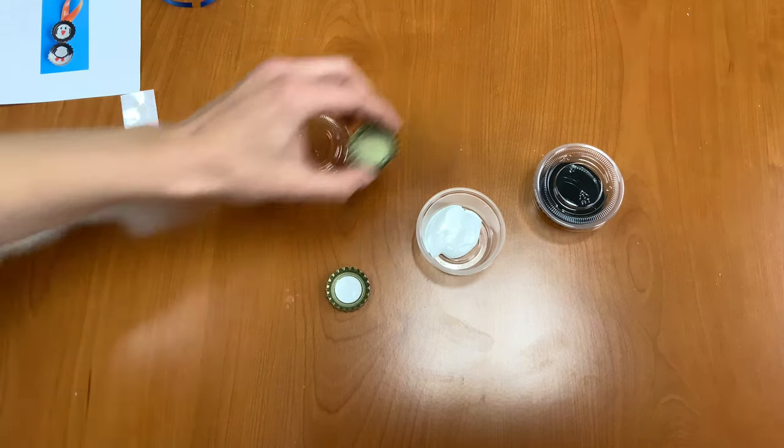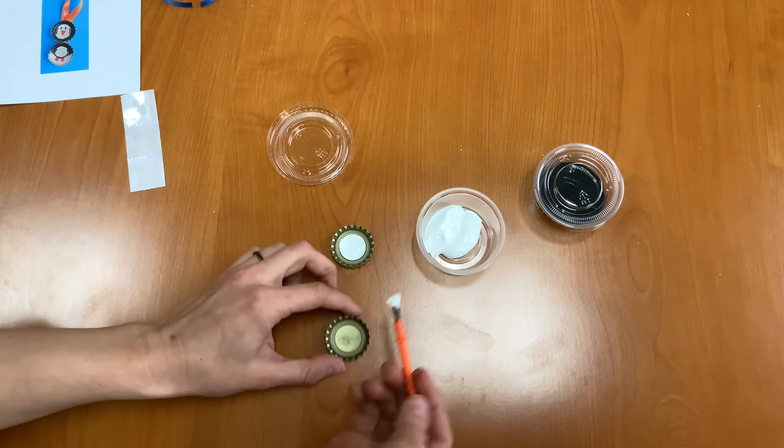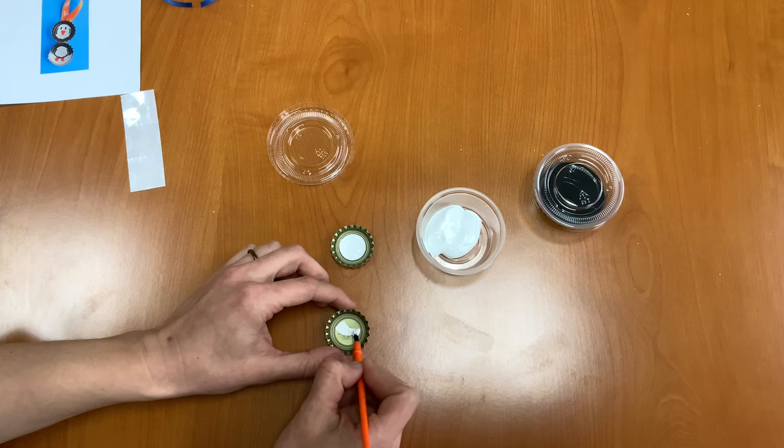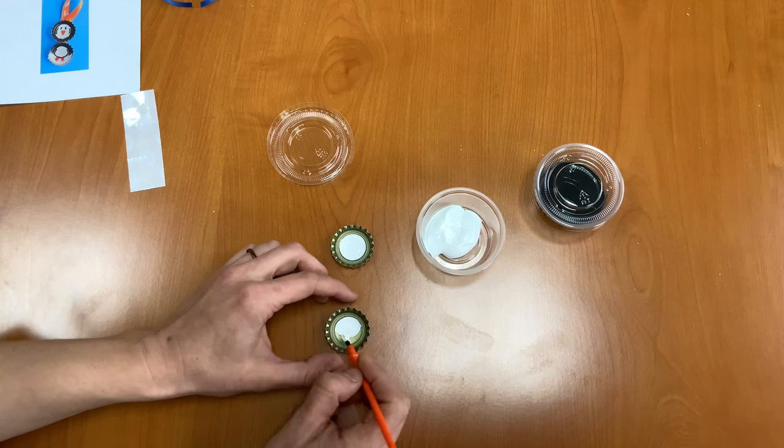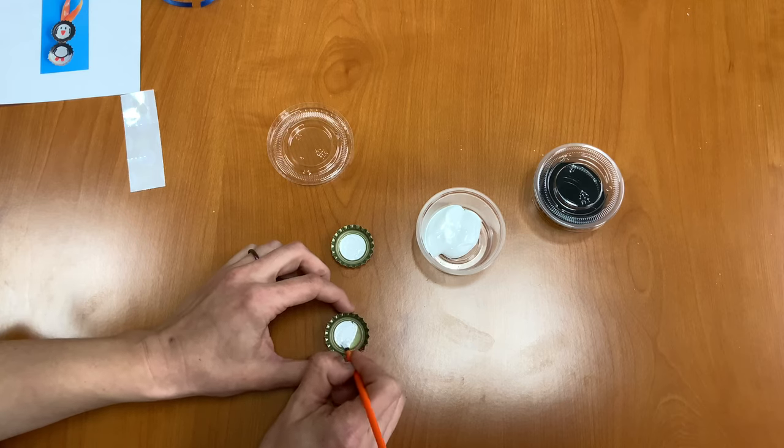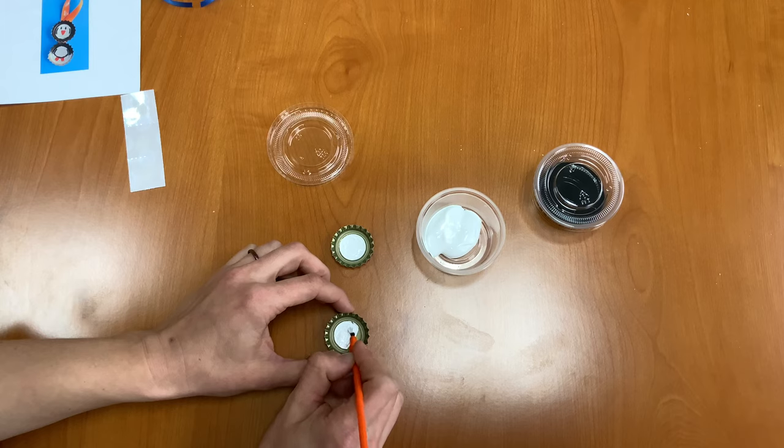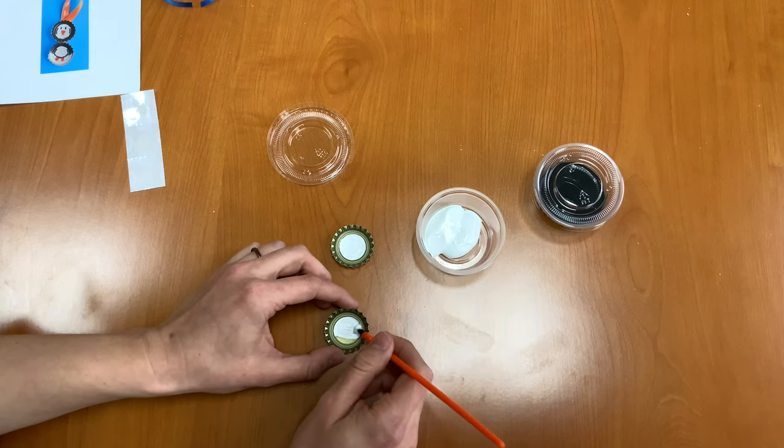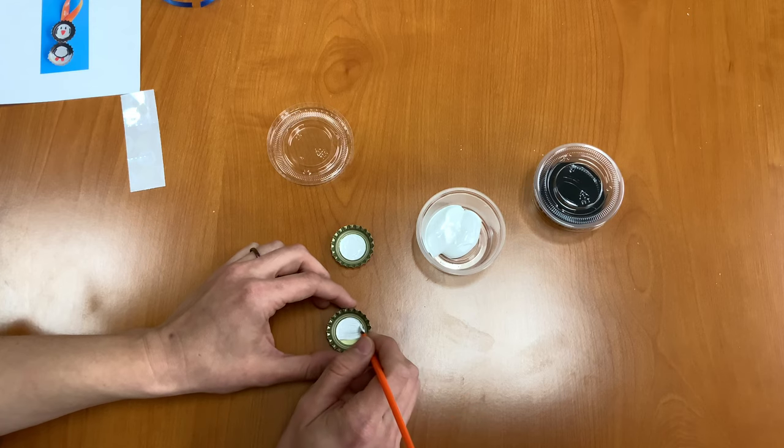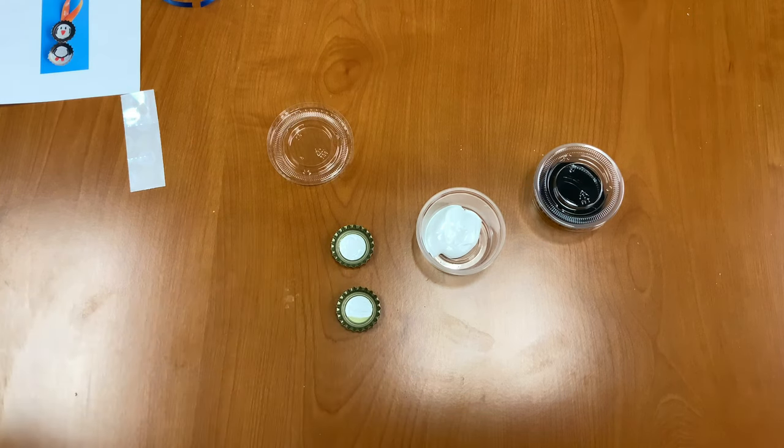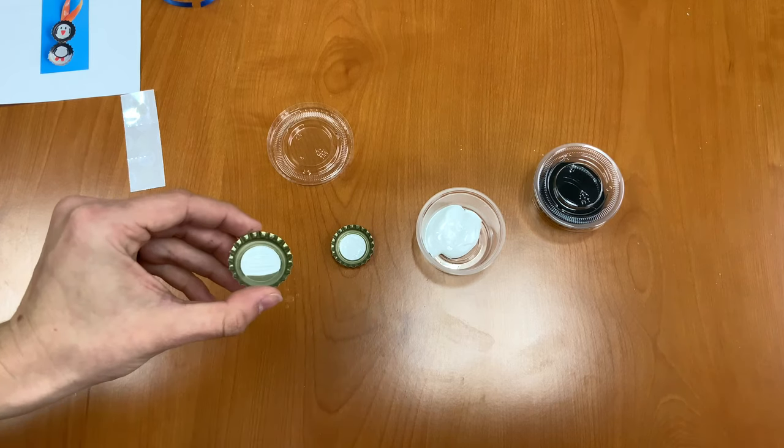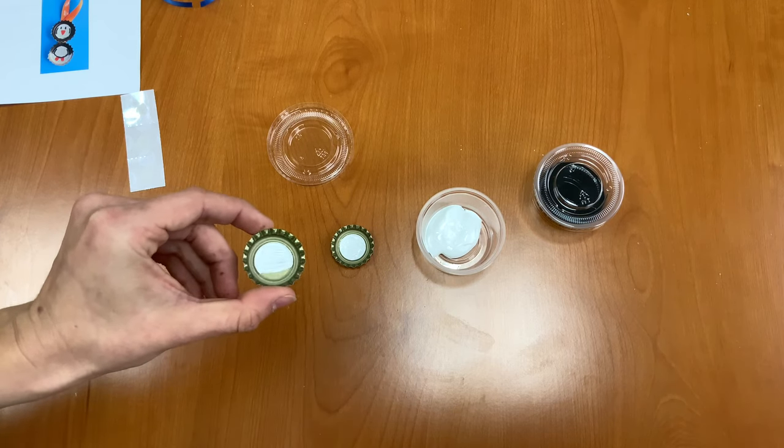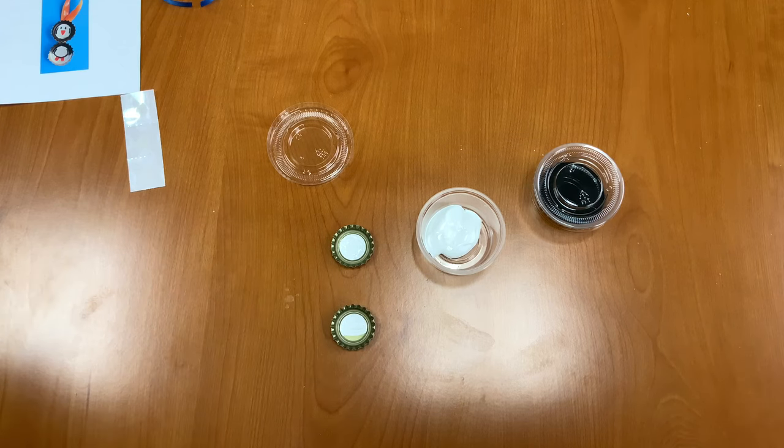While you're waiting for that one to dry, we can start on this second bottle cap and we're going to do just a white half circle on this one. So this is going to be your penguin's body and we want to leave some room at the bottom for its feet. As you can see, I've only painted about three quarters of that circle. Now let's wait for those to dry and I'll see you in just a minute.